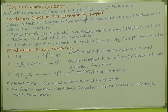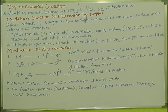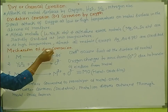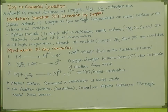So this is the mechanism of dry or chemical corrosion. In this video, we talked about dry or chemical corrosion: the first type, oxidation corrosion, and the mechanism of dry corrosion. If you like this video, please comment, share, and subscribe to support this channel. Thank you.